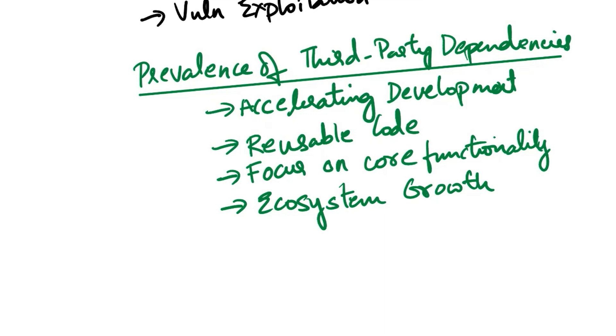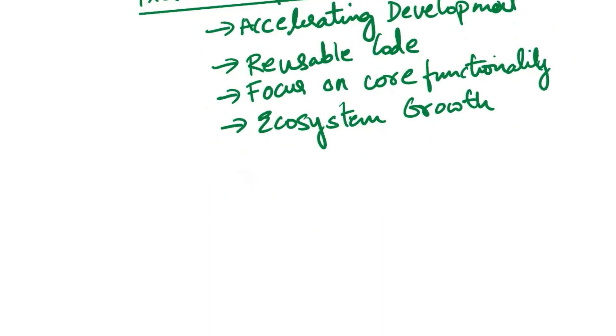Now let's see why is it important to address the risks associated with using third-party libraries. First is complexity and risk. The more third-party dependencies a project has, the more complex it becomes to manage and secure. Each dependency introduces potential vulnerabilities and compatibility issues.